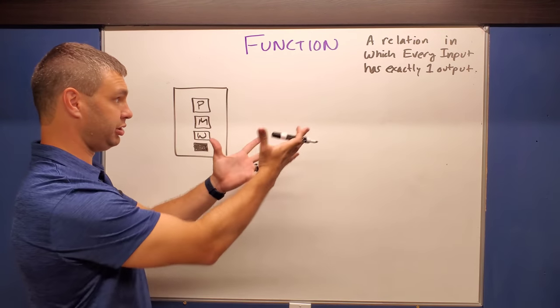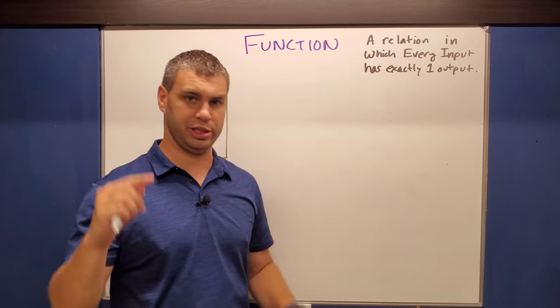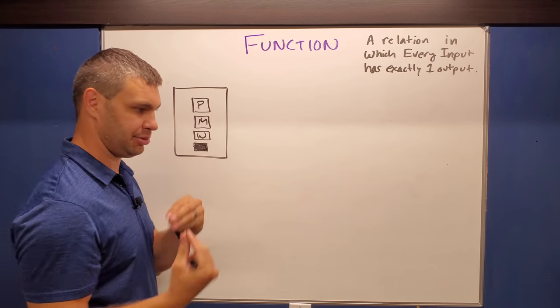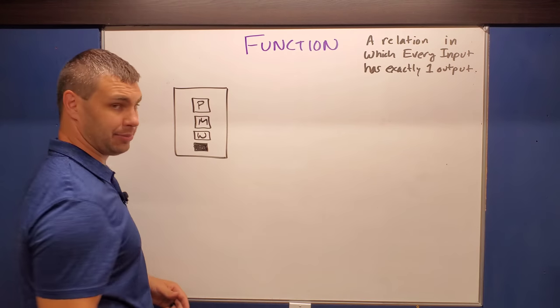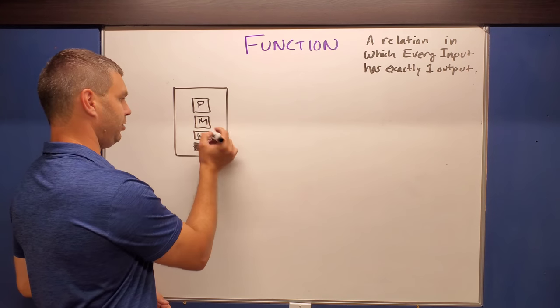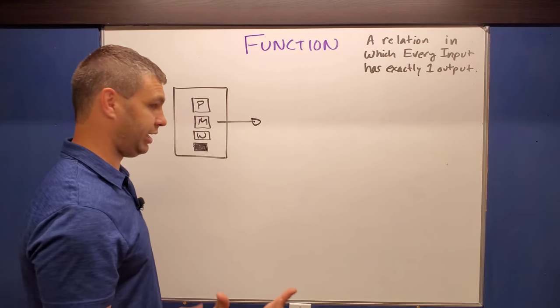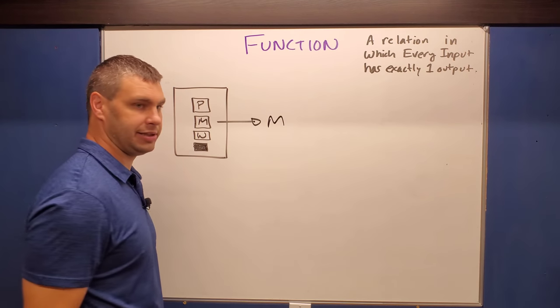Now, a function, remember, is a relation which every input has exactly one output. So when you press that button on the vending machine, that's going to be your input. You're telling the machine what you want it to do. You're inputting that data. So for example, Mountain Dew is probably my favorite of these. So when I hit the Mountain Dew button, what I expect to get out, of course, is a Mountain Dew. If I didn't, I'd be mad. I'd probably kick it and that wouldn't go well. So I'm going to say Mountain Dew right there.